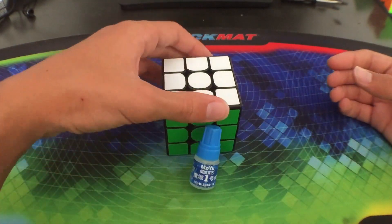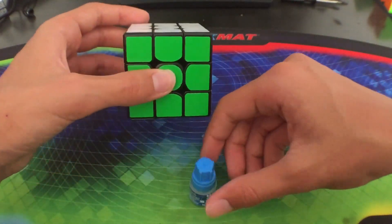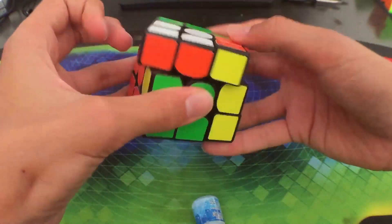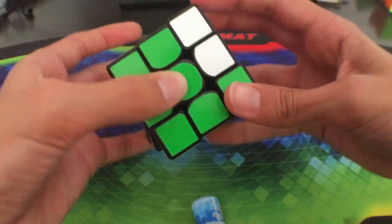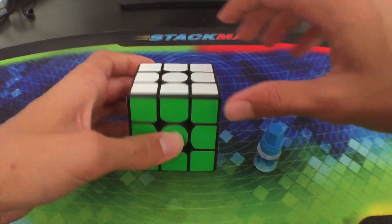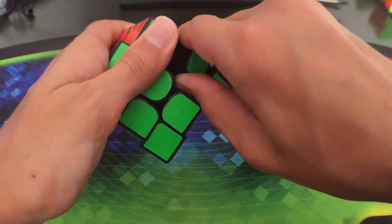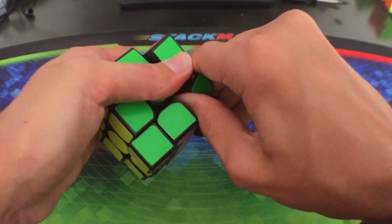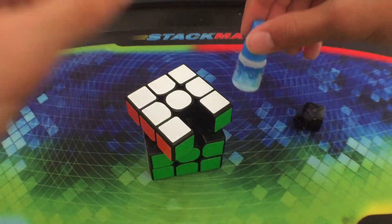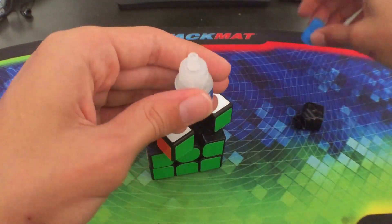Starting off with version one, I'll be using it on this Yushin Little Magic. It's a very nice puzzle. It could be a bit smoother which is why I'm going to use it on this. Now, without further ado, let's give it a shot.